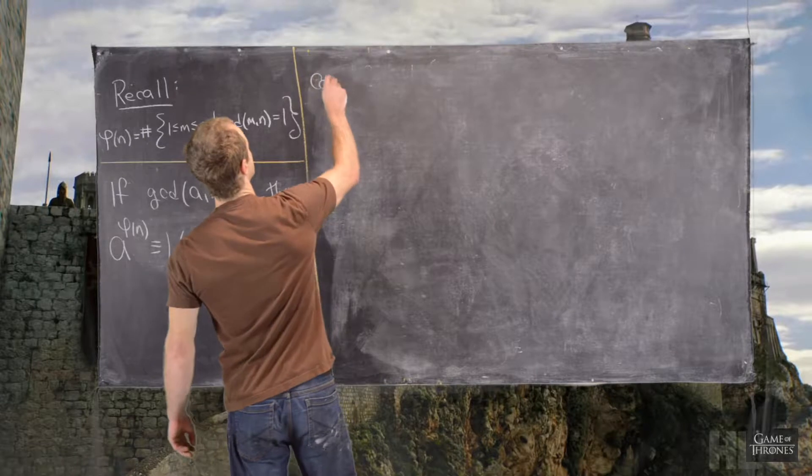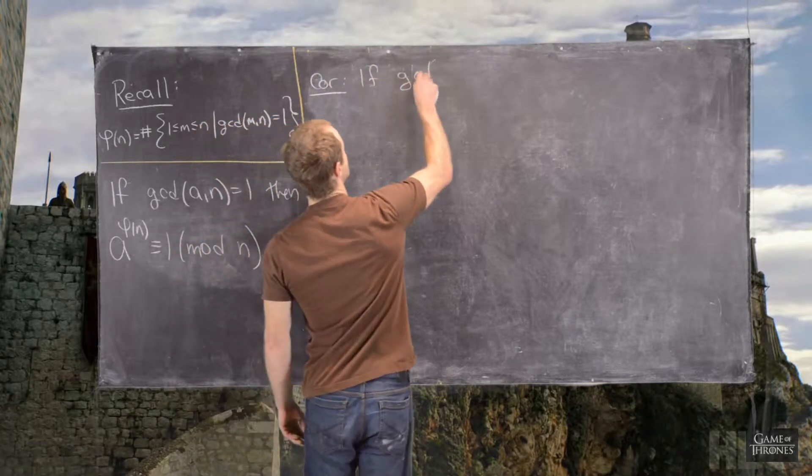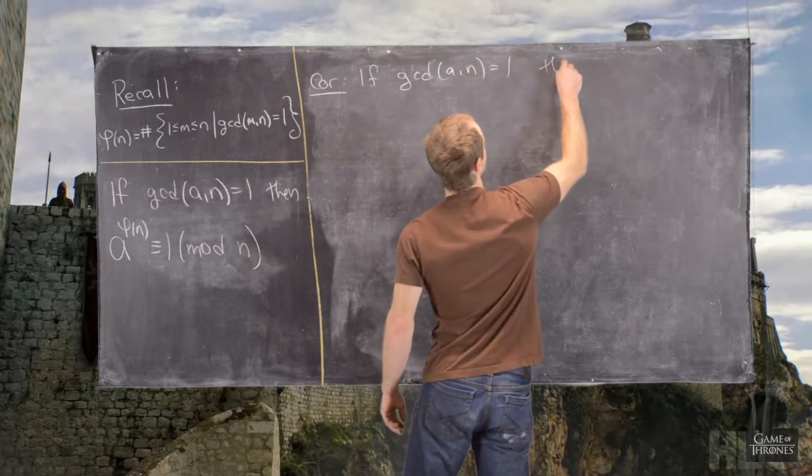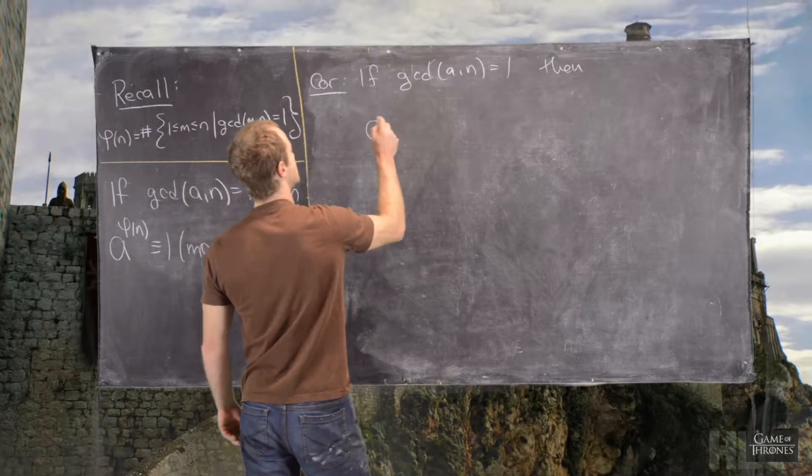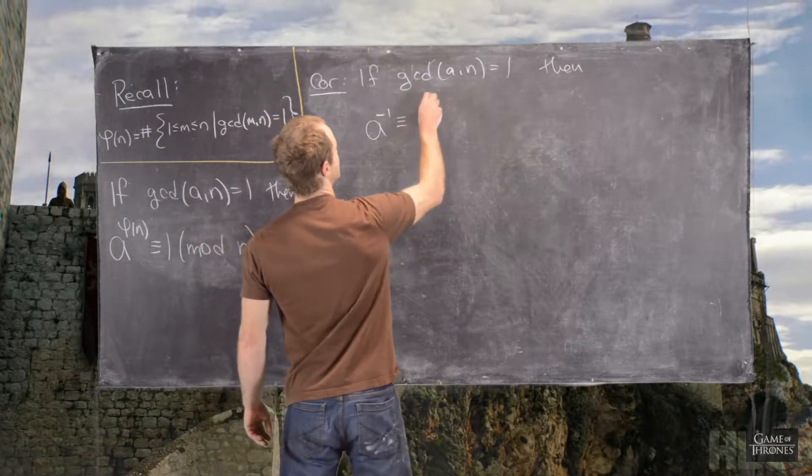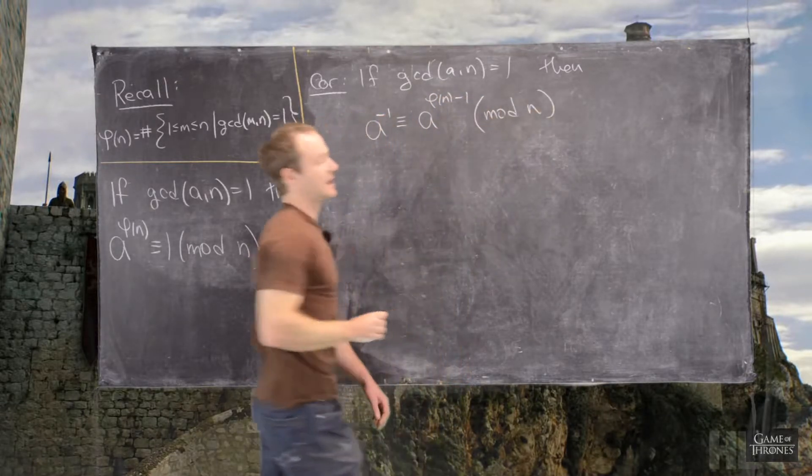So now, here's our corollary, and that says that if the GCD of a and n is equal to 1, then a inverse is congruent to a to the phi of n minus 1 mod n.